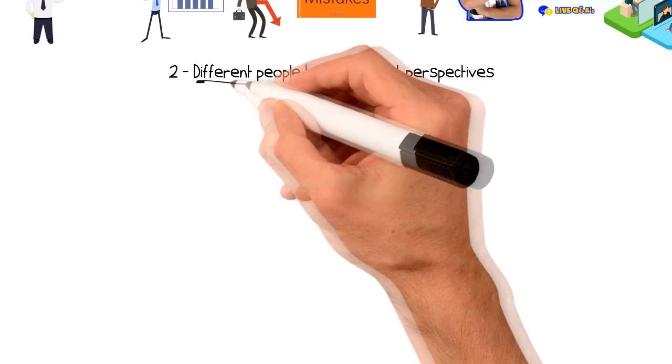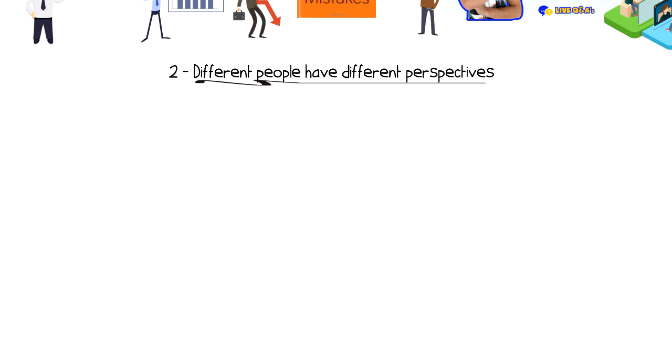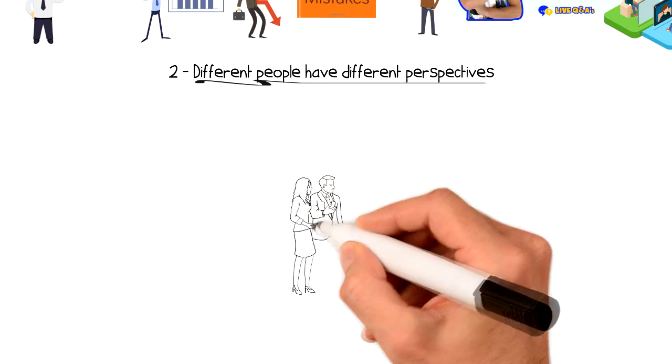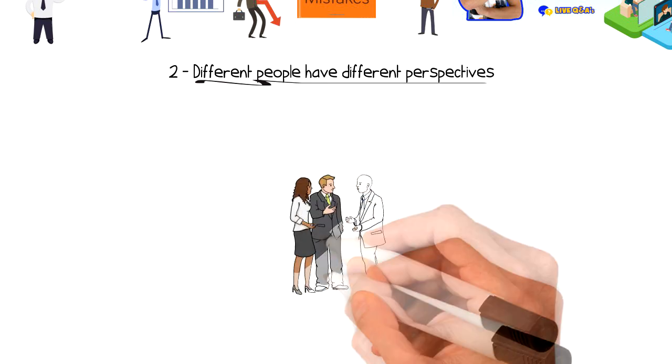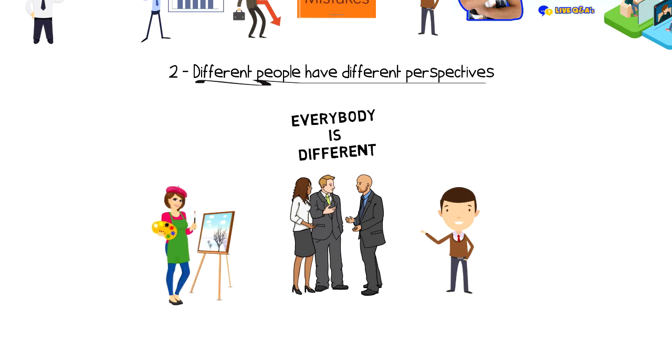Number two, different people have different perspectives. Another trap that we often fall into is the assumption that other people think and act in the same way as we do. But this is far from the truth because every person is different. They have different views and different perspectives. What might seem good to you might be completely unacceptable to another person.